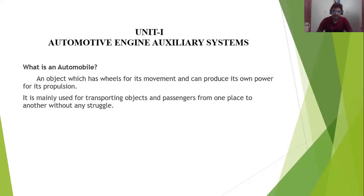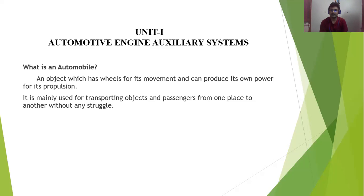Now we can step into the first unit. Before starting, you need to know some basics. First, what is an automobile? An automobile is an object which has wheels for its movement and can produce its own power for its propulsion. 'Auto' means self, 'mobile' means movement — that's where the name evolved.